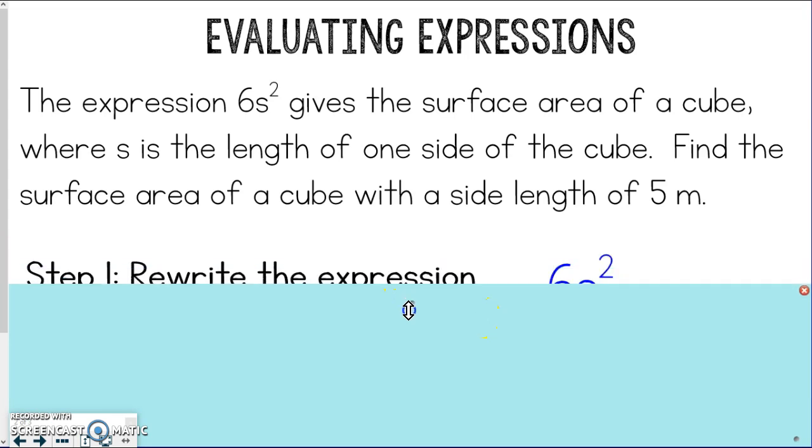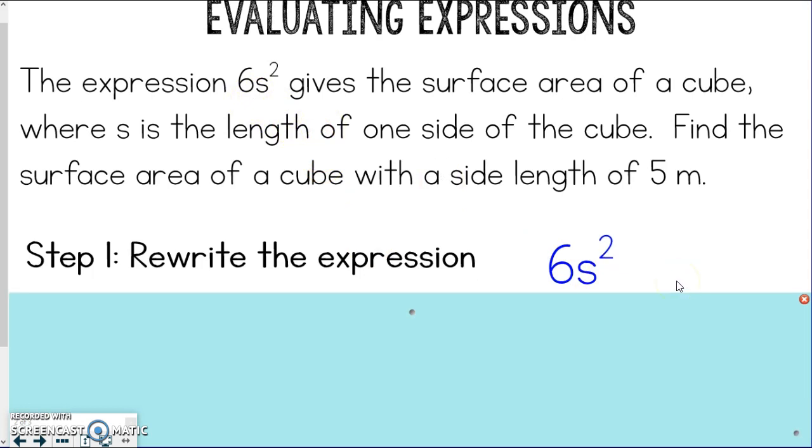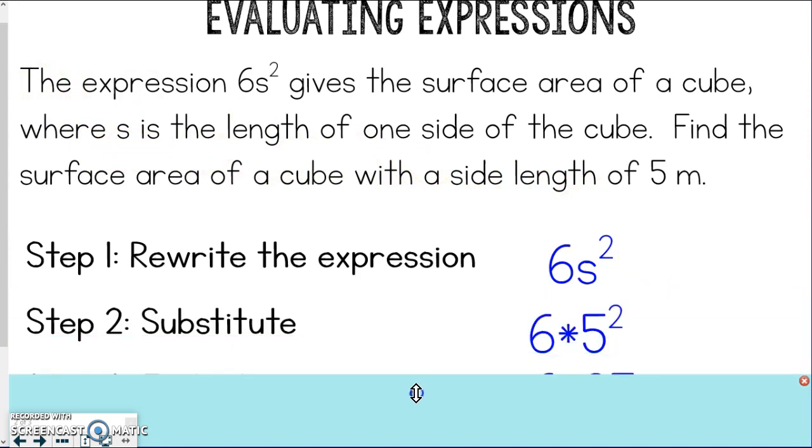So again, we need to rewrite the expression first, so I'm just taking it straight from the problem. 6s squared. Then we need to substitute. Well, they tell us that the side length, which was s, is 5 meters. I know it doesn't say s equals 5 meters, but if we see that it says side length, and up here it said s is the length of one side, we can probably figure out that's what s would be. So we're going to substitute that in.